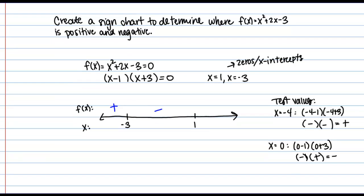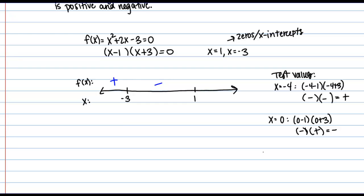And then I have one more interval. Pick a test value, I could use x = 2. If I plug that in to my factored form here, I get a positive times a positive. So that's a positive overall.